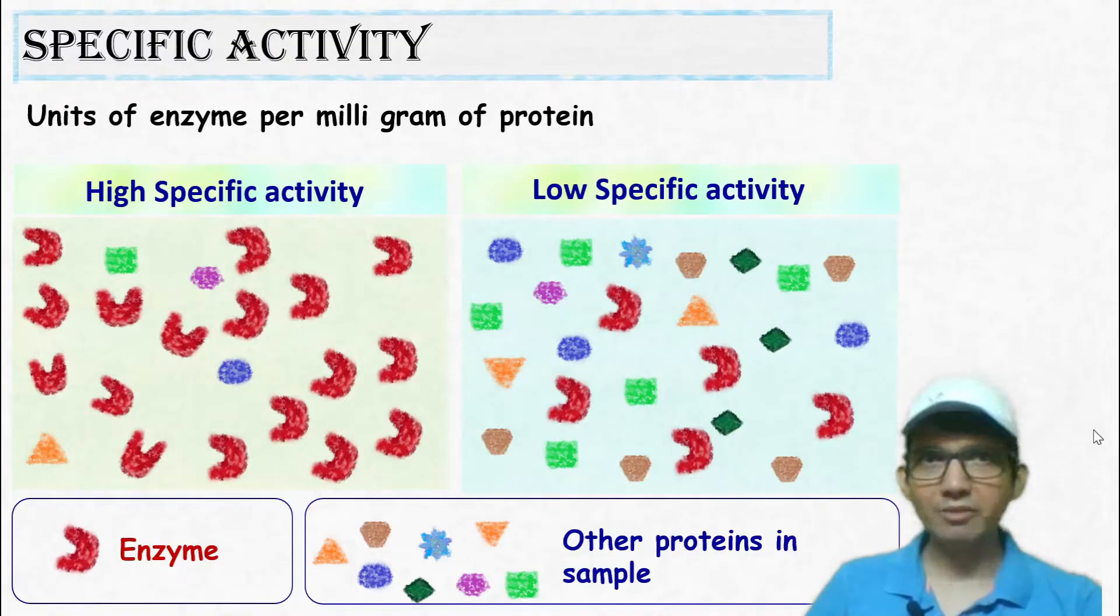Low specific activity means the units of enzyme present in the given sample is very less, whereas the other proteins are present in large number.